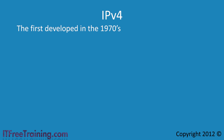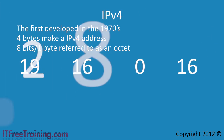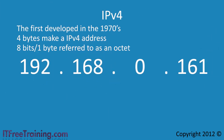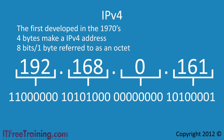An IP version 4 address is made up of 4 bytes. 8 bits is referred to as a byte, but in IP version 4, 8 bits can also be referred to as an octet. If I take a standard IP version 4 address, it is common for it to be divided up into 4 parts. These 4 parts can be converted into binary. If you are not sure how to convert numbers to binary, see another video on converting decimals to binary.